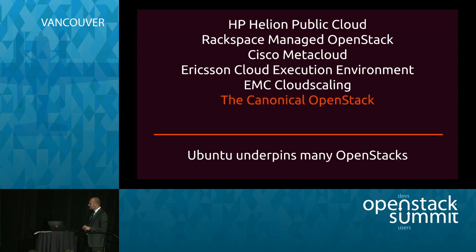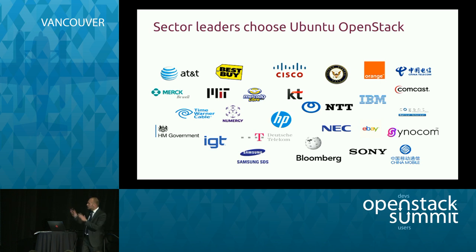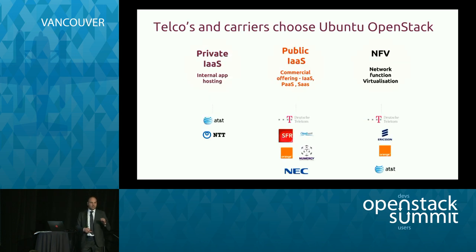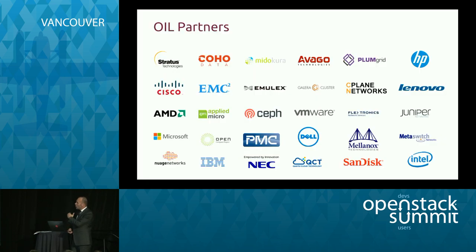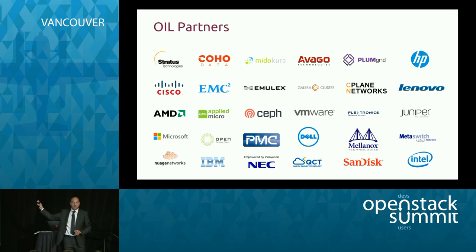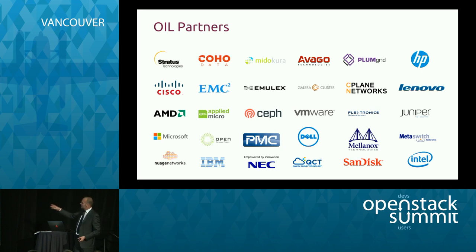What I want to focus on is the canonical OpenStack distribution. These are some of the leading companies that have built OpenStack on Ubuntu. Today we can talk about Walmart — thank you to the Walmart folks for mentioning us in their keynotes. Telcos are a real focus because they aspire to scale and reliability. This is OIL, our OpenStack Interoperability Lab — you'll see a bunch of new names there like Coho. Every vendor is welcome in our interop laboratories. We build the cloud more than 100 times every day with components from different vendors to generate an enormous amount of interoperability data.